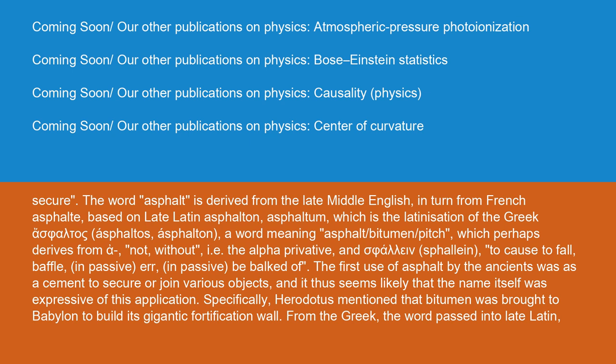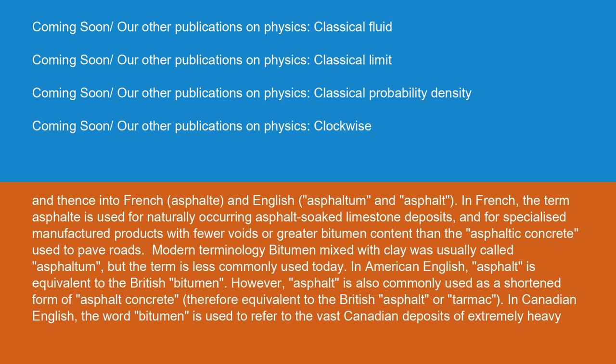Herodotus mentioned that bitumen was brought to Babylon to build its gigantic fortification wall. From the Greek, the word passed into Late Latin, and into French as asphalt and English as asphaltum and asphalt. In French, the term asphalt is used for naturally occurring asphalt-soaked limestone deposits, and for specialized manufactured products with fewer voids or greater bitumen content than the asphaltic concrete used to pave roads.